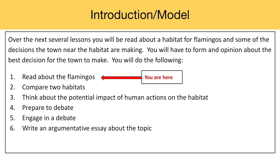You will do the following: 1. Read about the flamingos. 2. Compare two habitats. 3. Think about the potential impact of human actions on the habitat. 4. Prepare to debate. 5. Engage in a debate. 6. Write an argumentative essay about the topic. You are here — Step 1: Read about the flamingos.